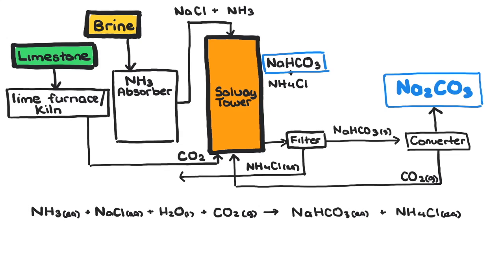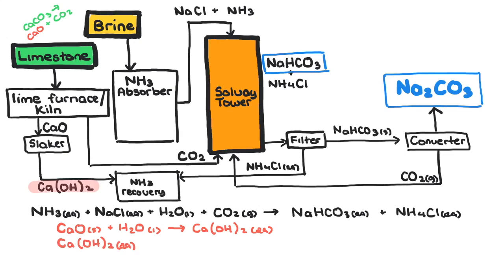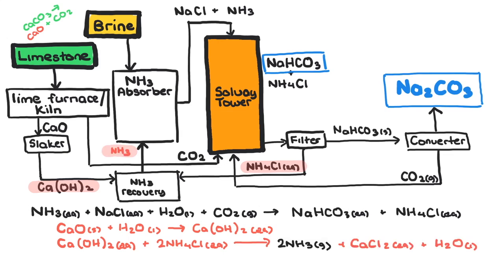Because ammonia is such an expensive raw material, the ammonium chloride solution is heated with calcium hydroxide to recover the ammonia. The calcium hydroxide is produced by reacting calcium oxide — formed during the earlier decomposition of limestone — with water. The recovered ammonia is then returned to the ammonia absorber for reuse.